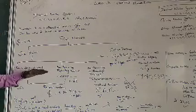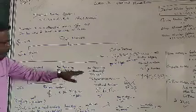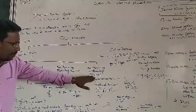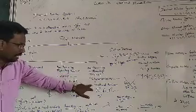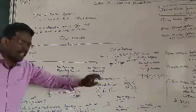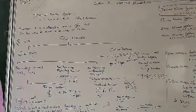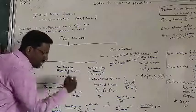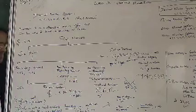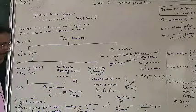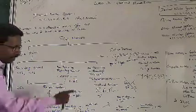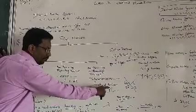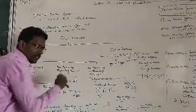When it comes to non-terminating non-repeating decimals, they are called irrational numbers. When we speak about irrational numbers, root 2, root 3, root 5 — they go on. We will first discuss rational numbers, then we will go there.